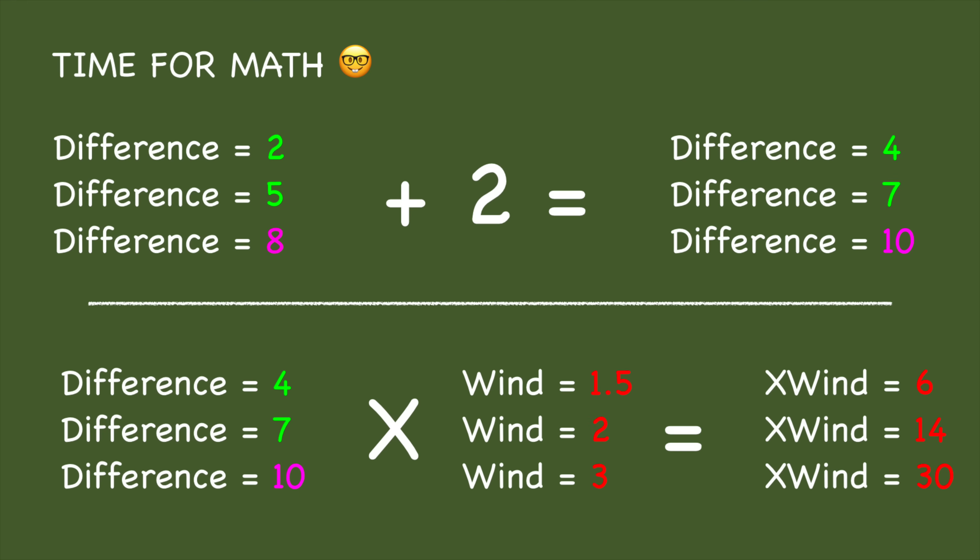Now that you have that new number, you're going to multiply the difference by the wind. So 4 times 1.5 equals 6 — 6 is your crosswind component. 7 times 2 equals 14 — 14 is your crosswind component. And 10 times 3 equals 30 — 30 is your crosswind component.